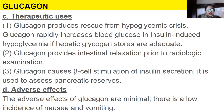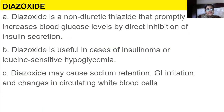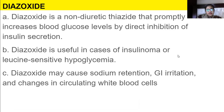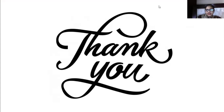The adverse effects of glucagon are minimal — there is a low incidence of nausea and vomiting. Then we have diazoxide, a non-diuretic thiazide that promptly increases blood glucose levels by direct inhibition of insulin secretion. It is useful in cases of insulinoma or leucine-sensitive hypoglycemia. Diazoxide may cause sodium retention, GI irritation, and changes in circulating blood cells. Thank you everybody, that is it for today.